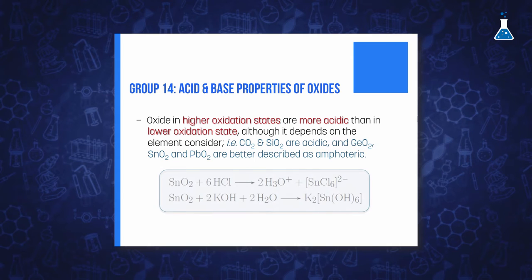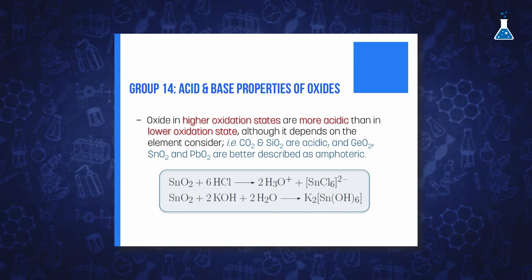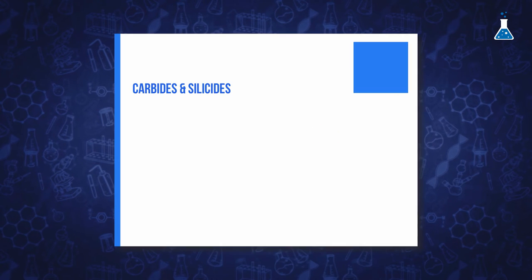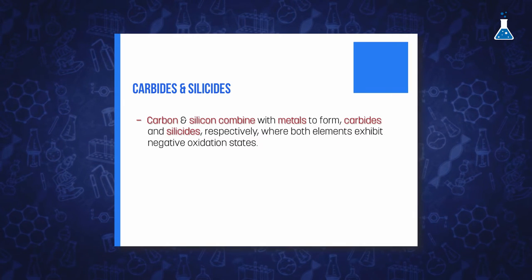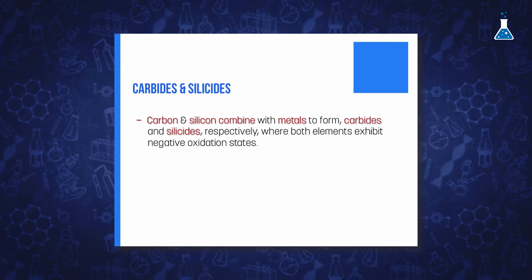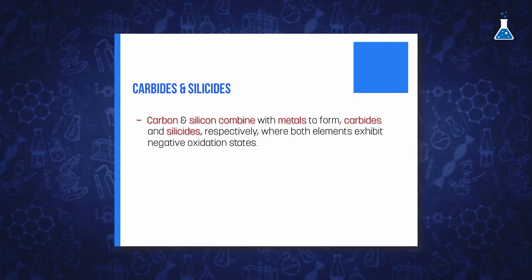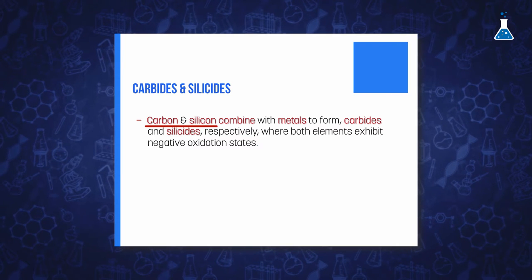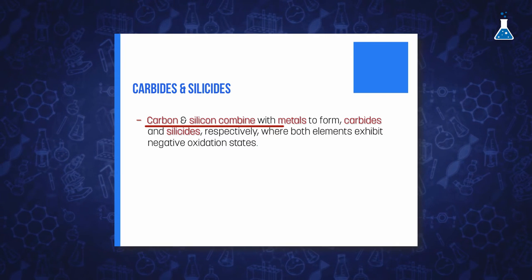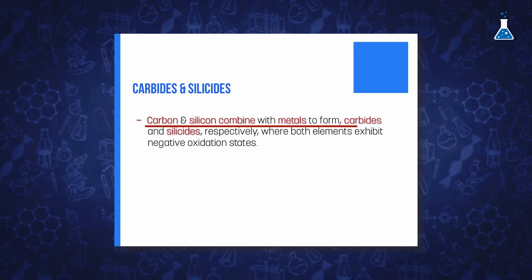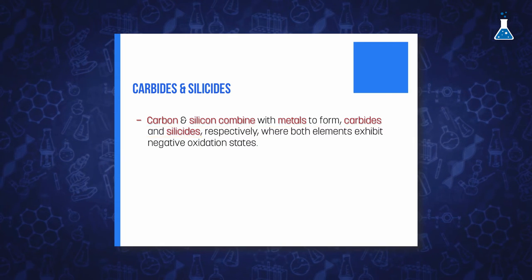Monoxides are also possible for all elements, although silicon monoxide is an unstable compound at room temperature. Whereas carbon monoxide is considered neutral, germanium, tin, and lead monoxides are amphoteric. In addition to these important compound families — hydrides, halides, and oxides — it is important to remark that for carbon and silicon there is the possibility to combine with metals to form carbides and silicides.